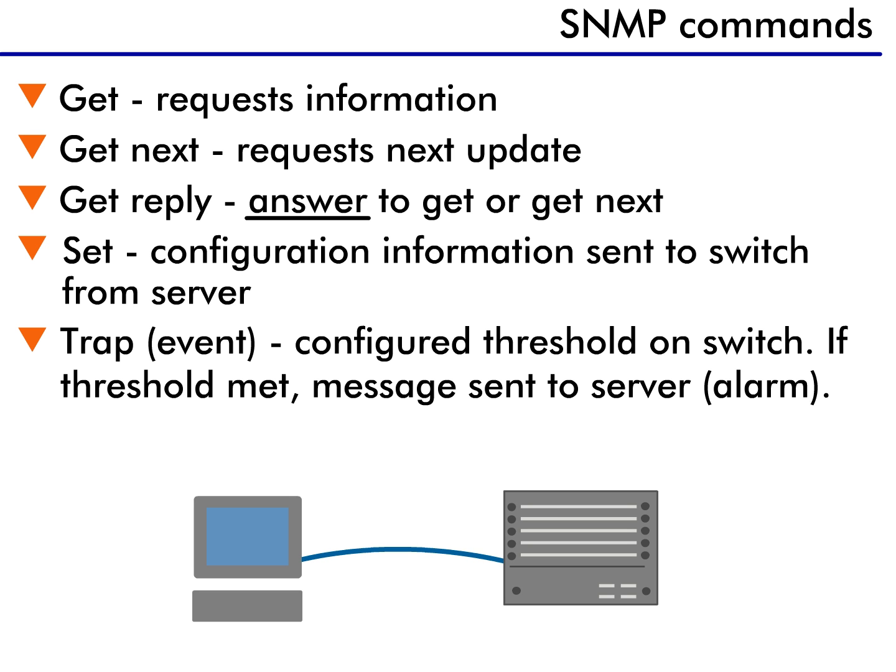As I mentioned, SNMP uses only a limited set of commands. The first command is GET. This command retrieves specific information stored in a file. The actual command would be something like GET 1.3.6.1.800.4.5.6. The GET says 'I want something,' and the number it generates is similar to a file number. Each piece of MIB information is identified this way.